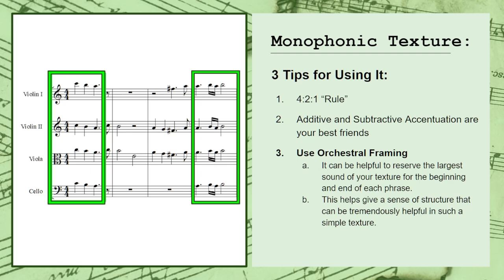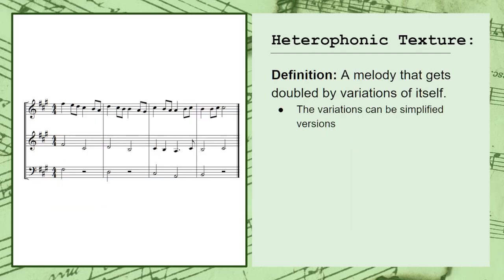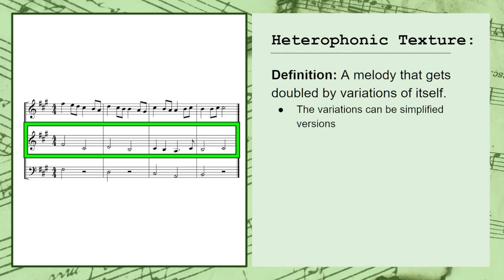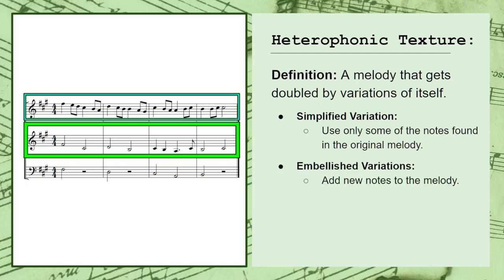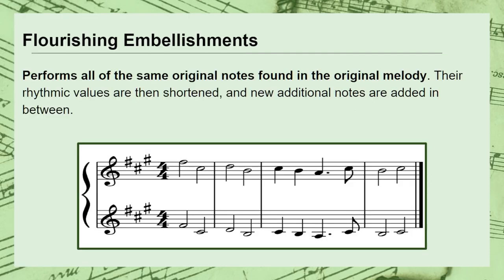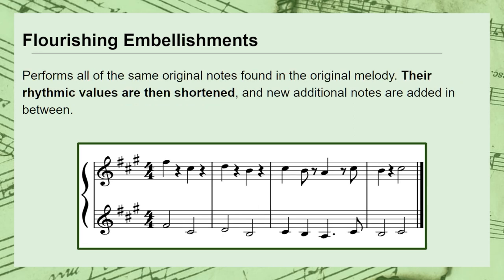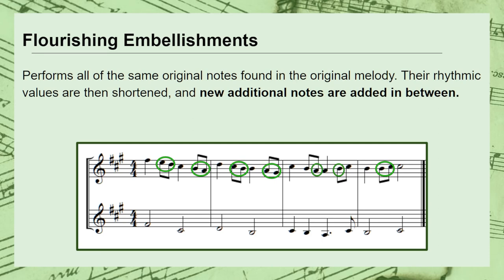Another useful linear texture is something called the heterophonic texture. This is the most complex of the three linear textures. It's a simple melody being doubled by variations of itself. These can be simplified variations, which use only some of the notes found in the original melody, or embellishing variations, which add new notes to the original melody. When it comes to embellishing variations, you essentially have two basic types. A flourishing embellishment performs all of the same original notes at the same time, however their rhythmic values are shortened and new additional notes are added in between.